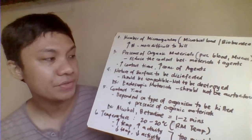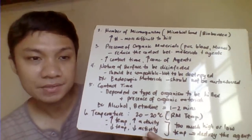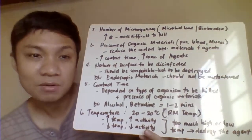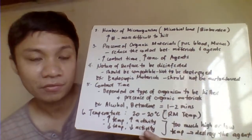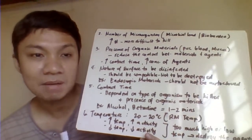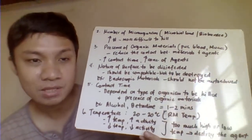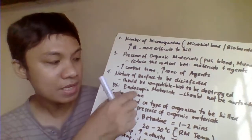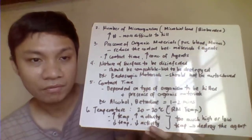Another factor is the nature of the surface to be disinfected. You need to check what type of material your instrument is made of, and select your agent accordingly — because combining the wrong agent with certain materials may damage them. For example, endoscopic materials should not be autoclaved. You need to consider the material composition before selecting a disinfecting method.